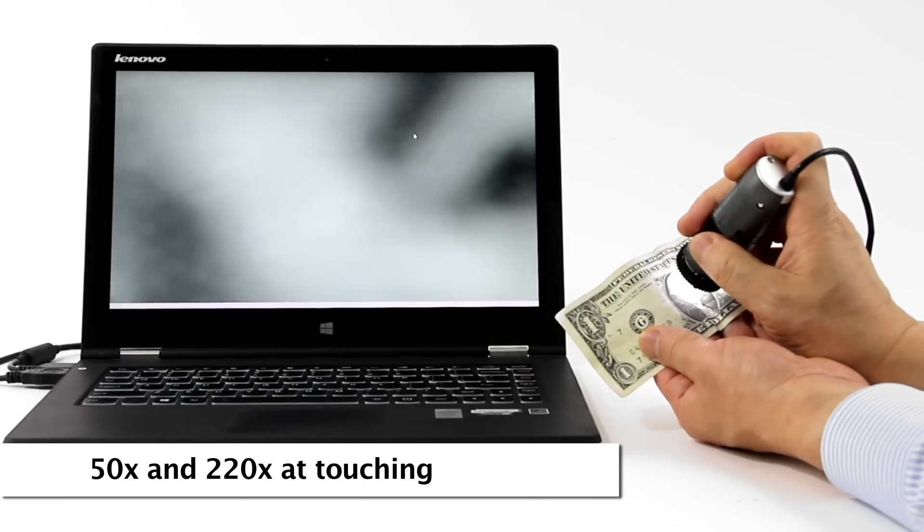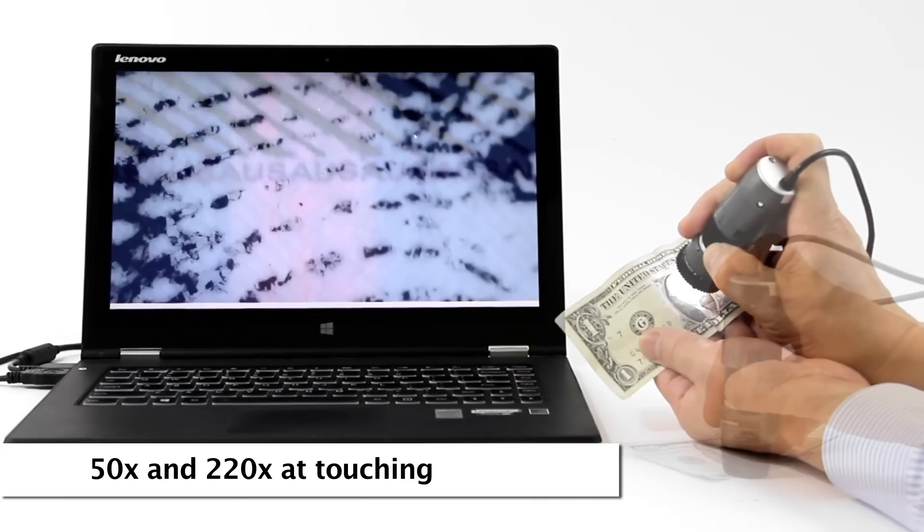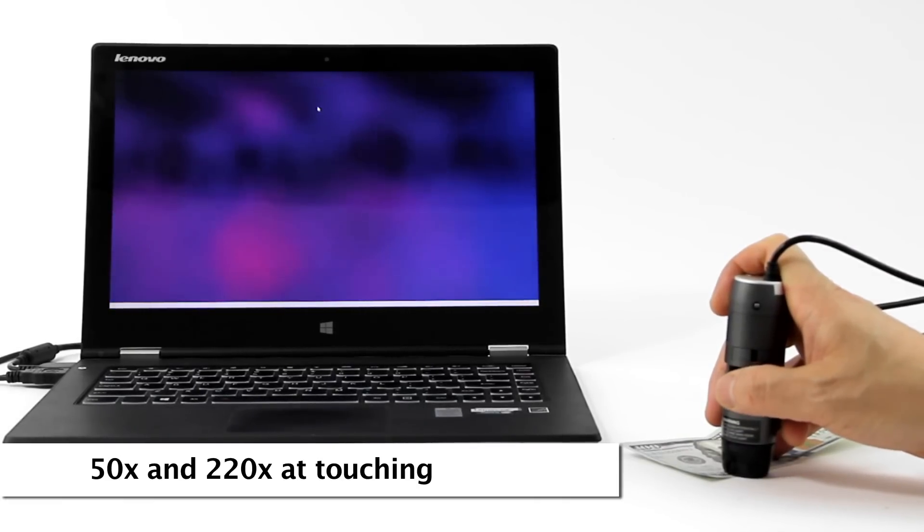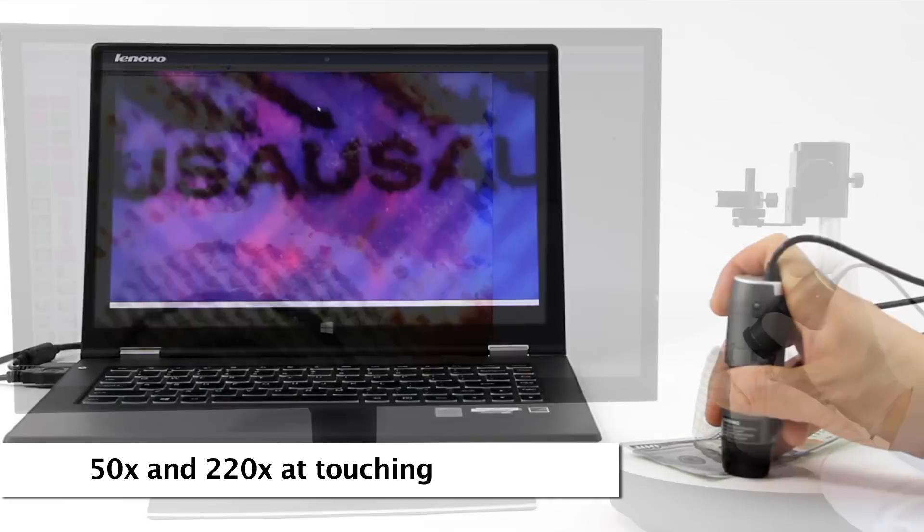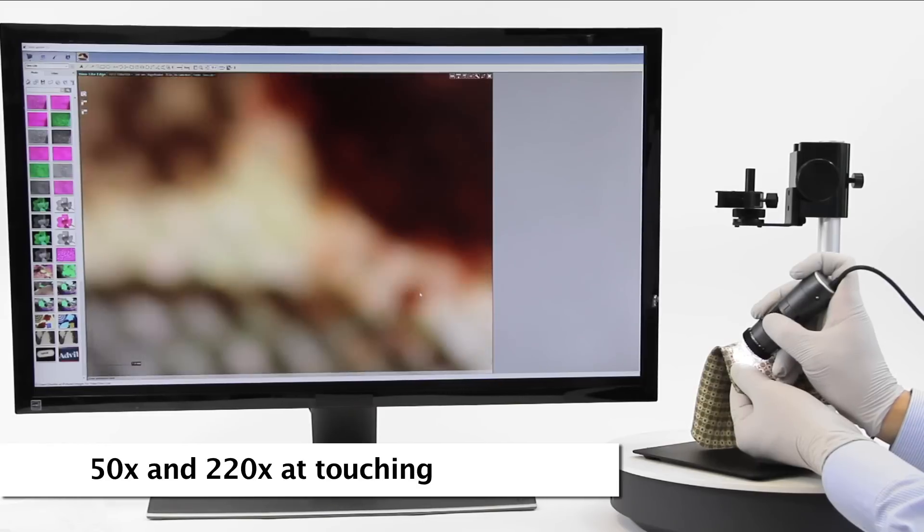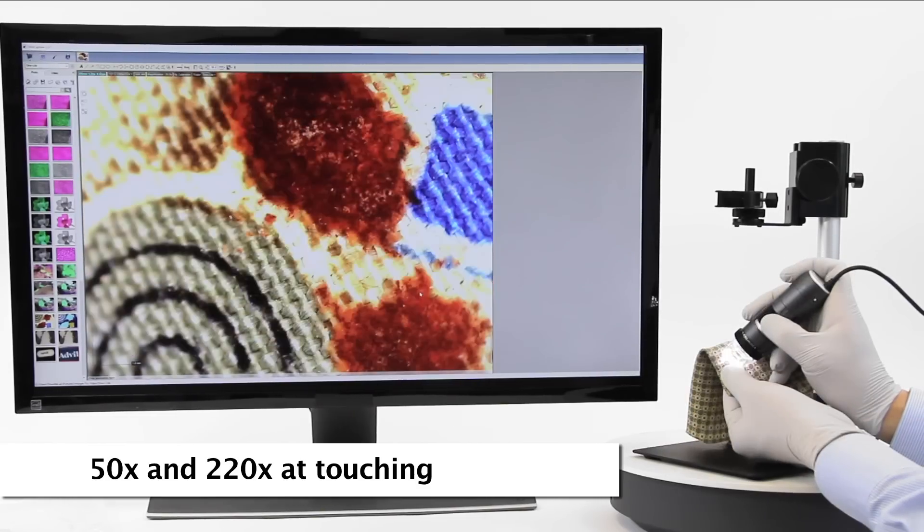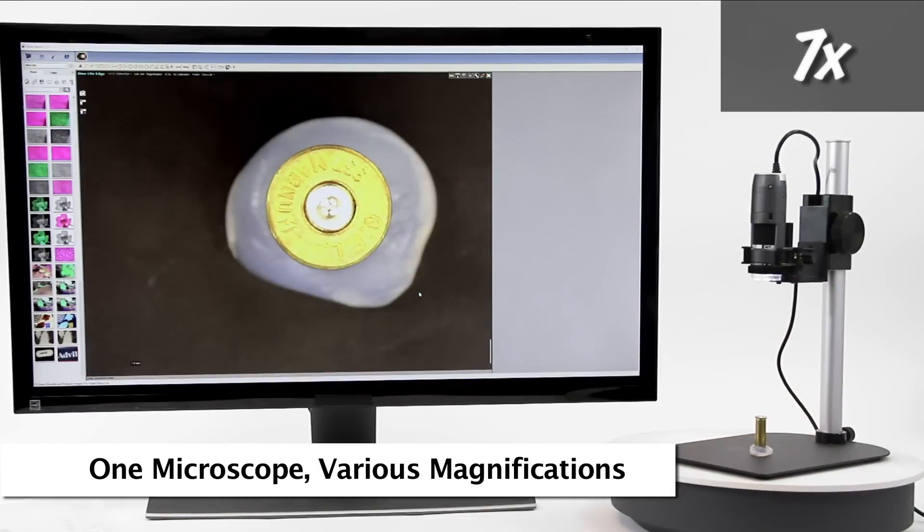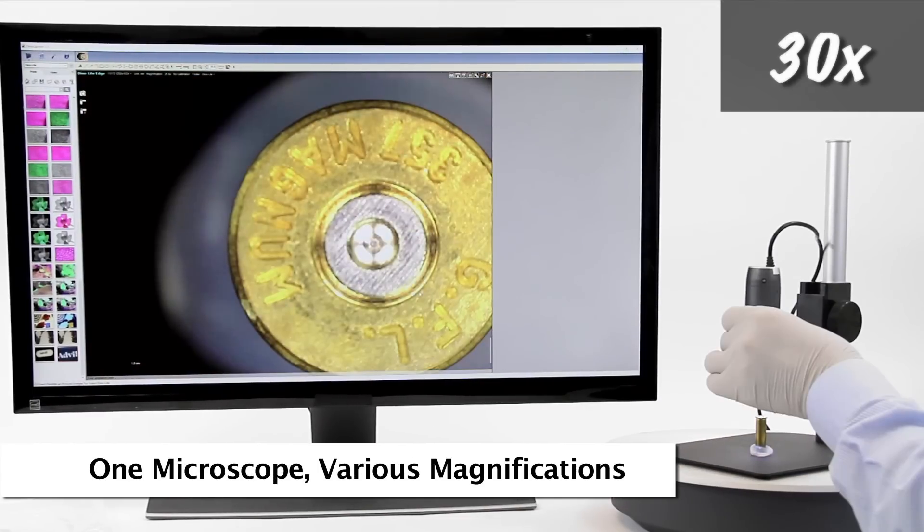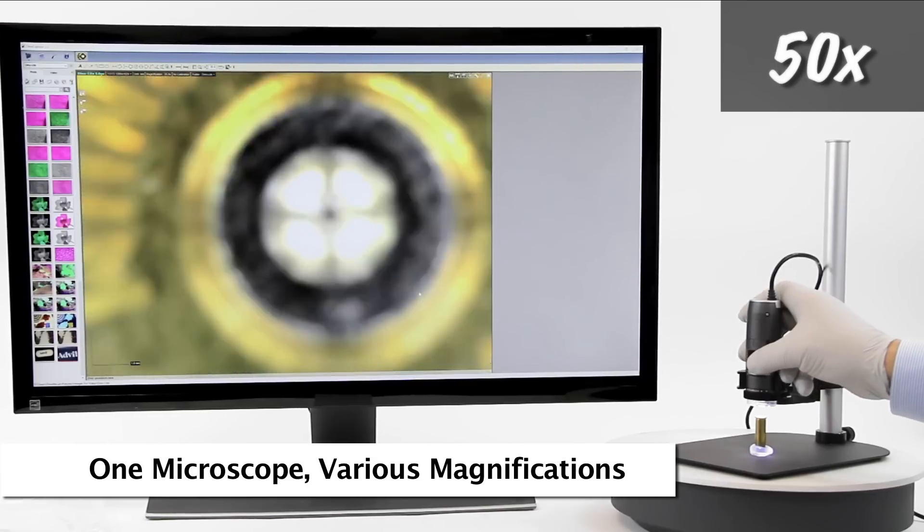Standard handheld Dynolite working distance allows for 50 times and 220 times magnification when the end of the Dynolite nozzle is in contact with the object being viewed. Here are some examples of the standard working distance and corresponding magnification with typical results.